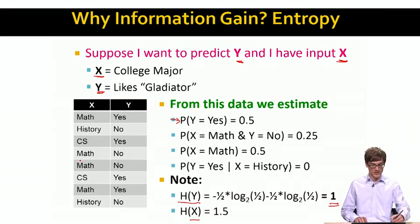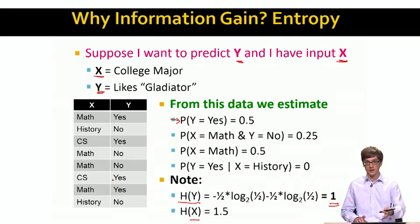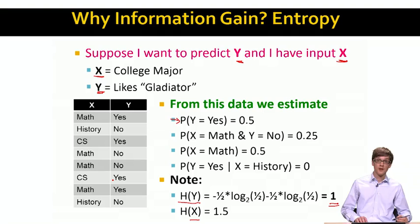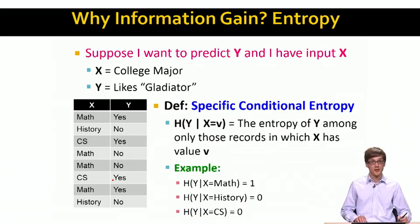In a similar way, I could also compute the entropy of x. Here x takes three different values: math, history, and CS. For each, I ask what fraction of times does x take that value, take those probabilities, and multiply by the log. What fraction of times does it take value CS? What fraction of times does it take value history? That's the idea of how we compute entropies on a given dataset.